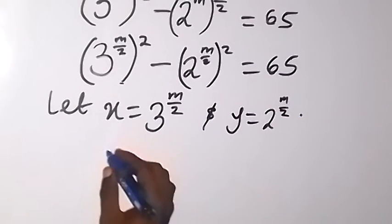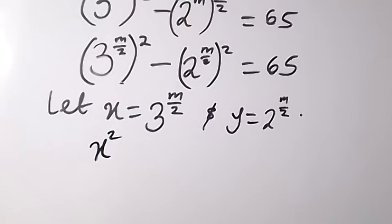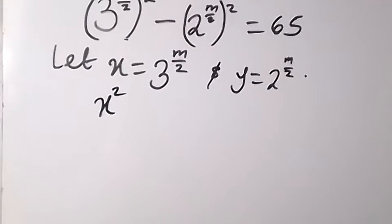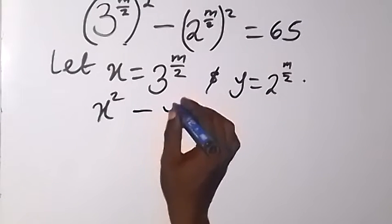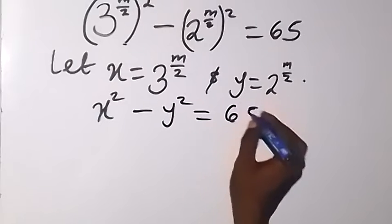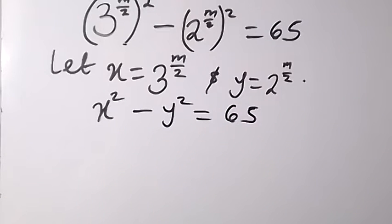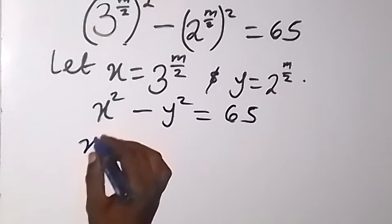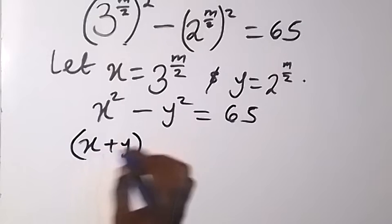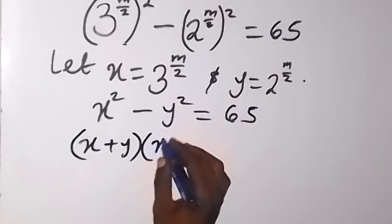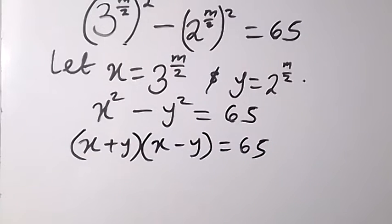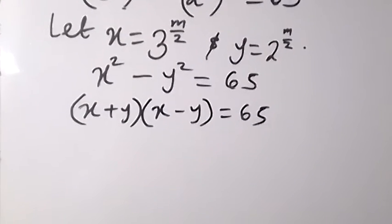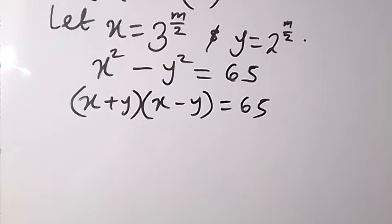When we write that equation we now have x squared minus y squared equals 65. This is in the form of difference of two squares. When we factor the difference of two squares, we have x plus y, multiplied by x minus y, equals 65. So these two numbers multiply together and the result gives us 65.